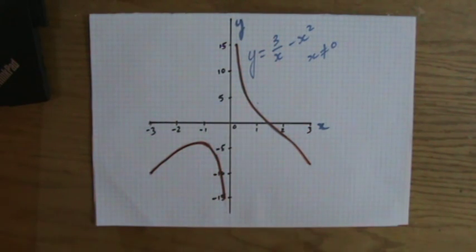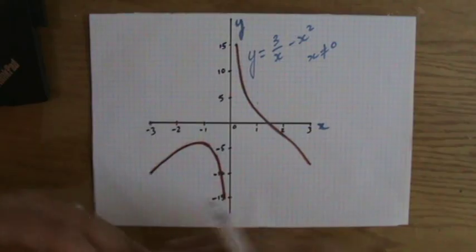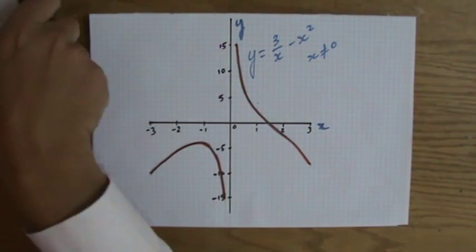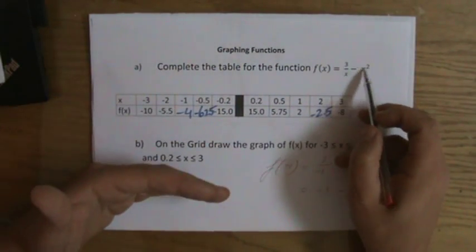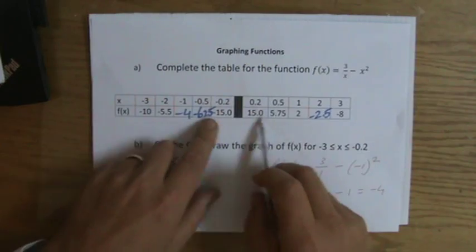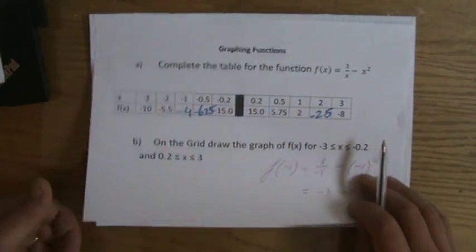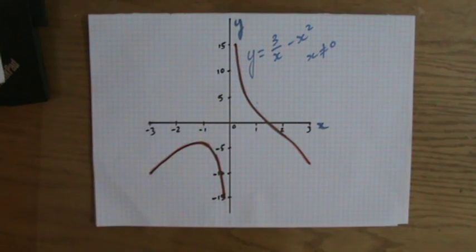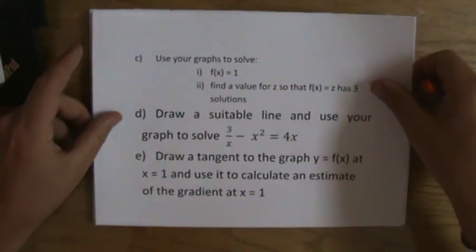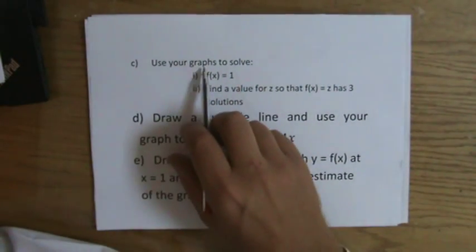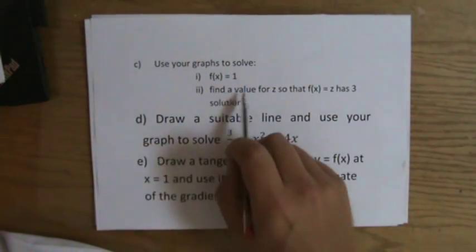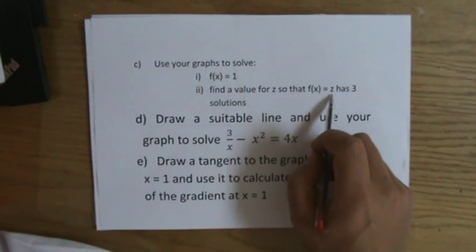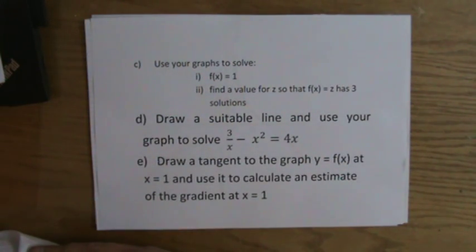Welcome back. This is part 2 of a question about graphing a particular function. In the previous video, f(x) = 3/x - x², a reciprocal function. We completed the table, pulled the coordinates, and drew the graph. Now we're going to answer the questions about the graph. Question c says: use your graph to solve f(x) = 1, and find a value for z so that f(x) = z has three solutions.